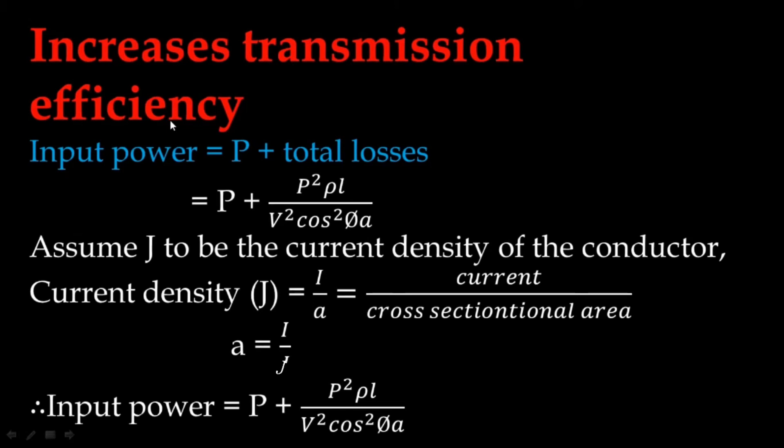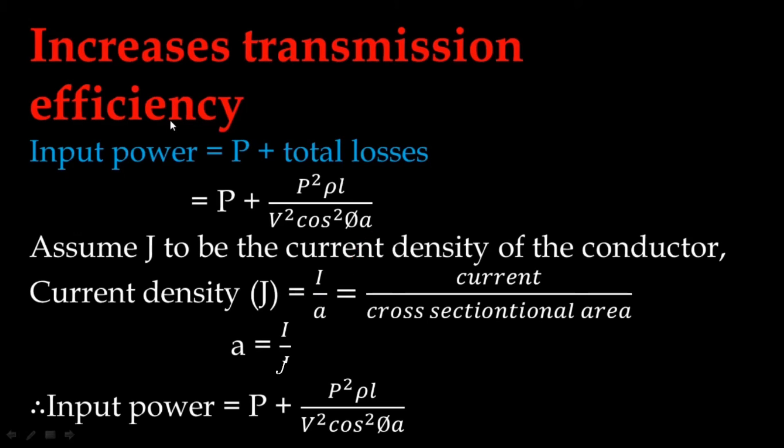The second one is the current density of the conductor. Current density of the conductor: J is equal to I divided by A, where I is the current and A is the cross-section area. So, the cross-section area A is equal to I divided by J.